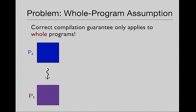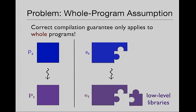Now, all of these things are impressive, but there's a problem with all of them: they all make the assumption that you will only ever compile a whole program. The correctness guarantee applies if you take a whole program — throughout this talk I'll write big P for whole program — not to be linked with anything else. You take a program in the source and you compile it down to a program in the target. But in reality, we almost never write whole programs. Even when we think we're writing a whole program, we're writing a component.